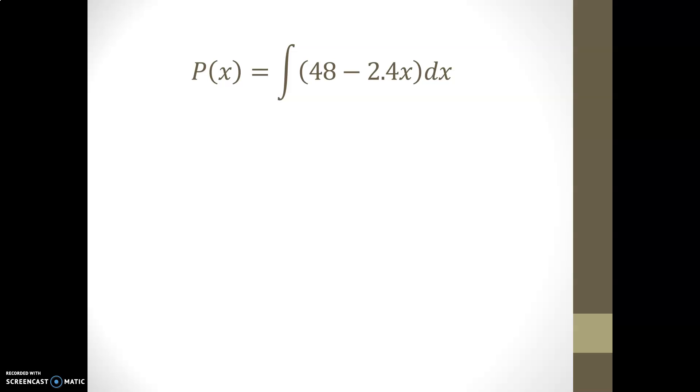In order to find the antiderivative of 48 minus 2.4x, you can use the properties for the anti-differentiation process. So you're allowed to split subtraction of functions, and you can also withdraw constant multiples. Here I've done both of those operations in one single step. So I've split out the 48 and the 2.4x functions and extracted them from each of their individual integrals.